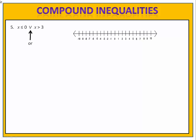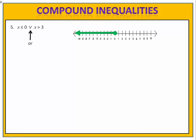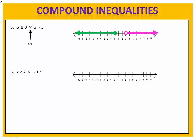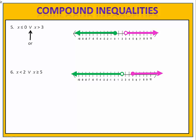Exercise five: x is less than or equal to zero or x is greater than three. Please pause the video and graph the compound inequality. We begin by graphing x is less than or equal to zero, then graph x is greater than three. Those two combined give us the compound inequality. Any number that's in one of the sets will satisfy it. In exercise six, we have x is less than two or x is greater than or equal to five. We graph each inequality individually, bring them together, and have the compound inequality. As long as a number is in either inequality, it satisfies the compound inequality and makes it a true statement.